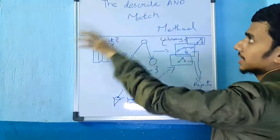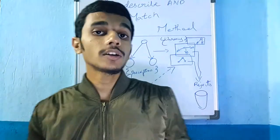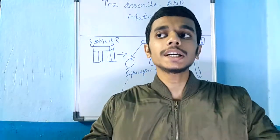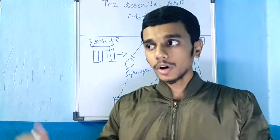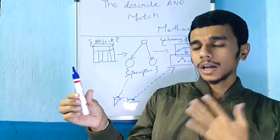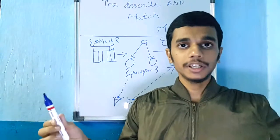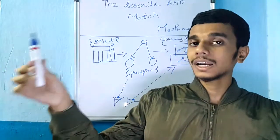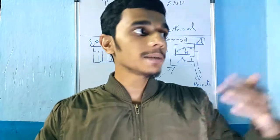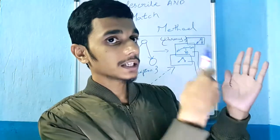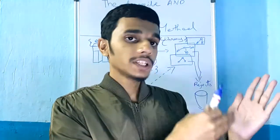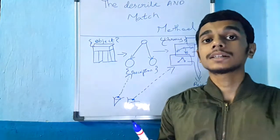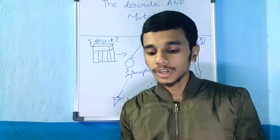By seeing the phrase 'describe and match,' you can determine what it talks about — description and matching. What it will do is describe an object and then match it. For example, if this is a pen and I am a computer seeing this pen for the first time, I have a description library. I'll see the pen's size, weight, color, and shape, then check if it matches a description in my library.